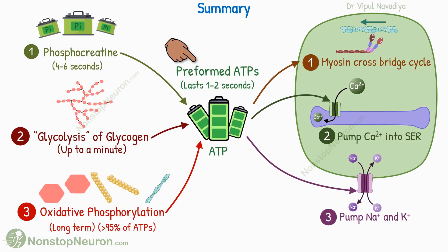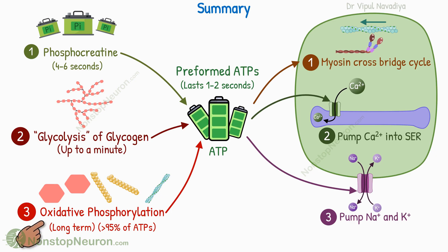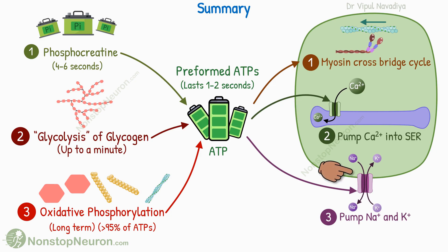Now let's have a quick summary. The immediate source of energy for muscle contraction is ATPs already available in the cell — it lasts for one to two seconds only. The first source for ATP generation is phosphocreatine, which lasts for an additional four to six seconds. The second source is the glycolysis of glycogen, and it lasts for up to a minute. The third and final source is the oxidative metabolism of carbohydrates, fats, or proteins — it lasts for the long term. ATPs are consumed mainly in the mechanical work of pulling actin over myosin, and small quantities are used to transport calcium into the sarcoplasmic reticulum and to transport sodium and potassium across the cell membrane.